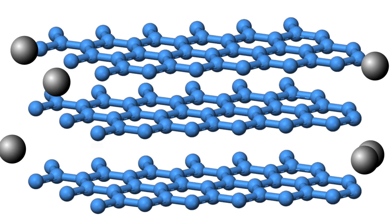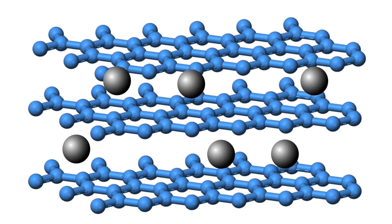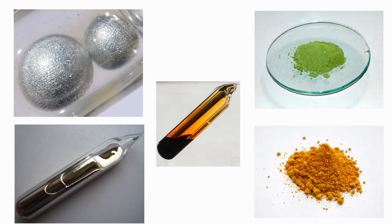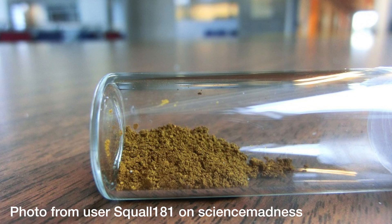If we were to instead use a more gentle process, it's possible to keep the layers together and put a variety of atoms and molecules in the space in between. Depending on what you choose as your intercalating material, the new compound will have a range of properties. For example, if you were to intercalate with potassium atoms, the color of the graphite changes to a bronze color, and this new compound is one of the most powerful reducing agents that we know of.